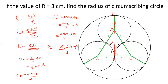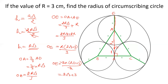The radius of the circumscribing circle is R times (2 root 3 plus 3) divided by 3. If we simplify by canceling the 3s, the final answer is 2r root 3 plus 3.